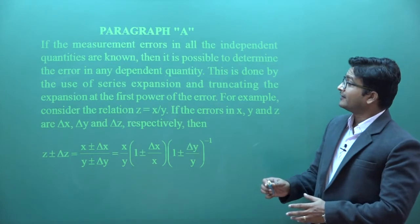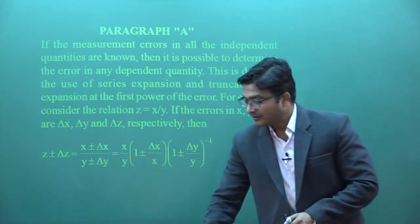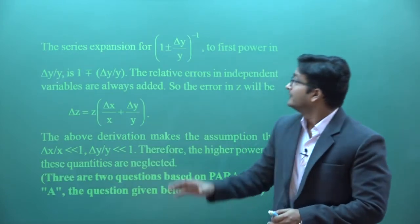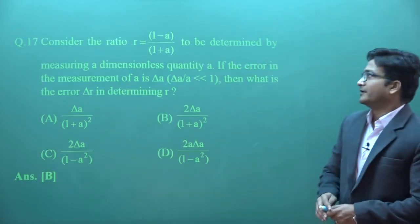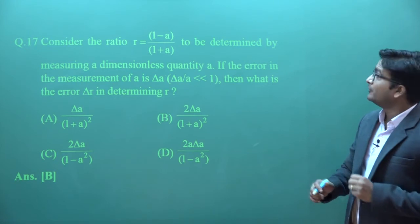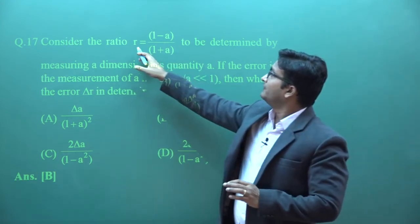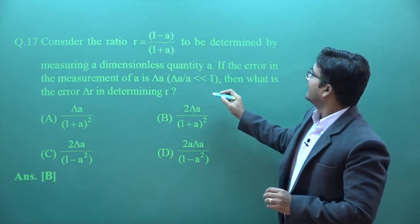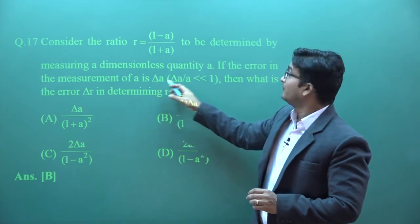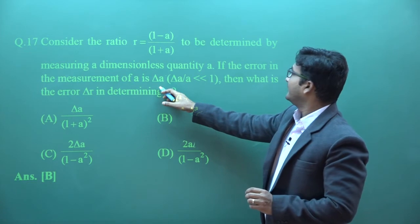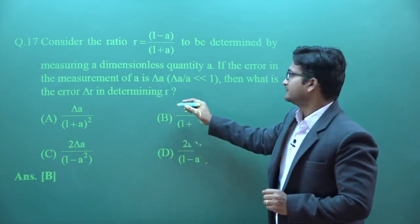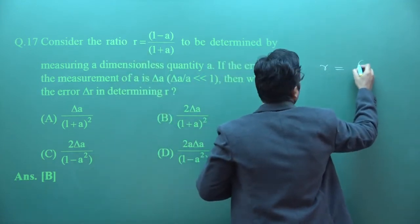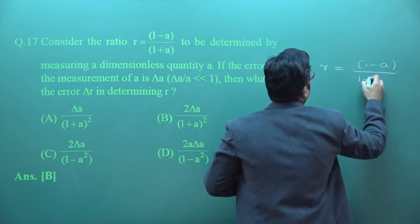The next paragraph is based on error analysis. Question 17: one physical quantity R depends on A, and the formula is given. If there is an error δA which is very small compared to A, what is the error in R? The formula is R = (1 − A) / (1 + A).